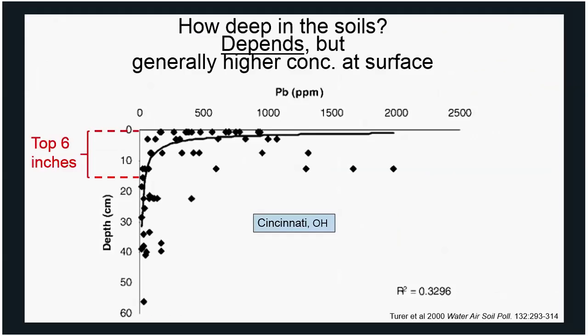Soils are three-dimensional - they go fairly deep. Evidence suggests that because lead was deposited from top down - as an aerosol from gasoline, as paint chips, or from rainfall - a lot of the lead is building up in topsoil. The top six to eight inches is where, in general, most lead is found in soils. This is in some sense good because it allows one to excavate a surface soil and truck it out if there are severely high amounts of lead. On the other hand, deeper lead is more expensive to remove, and plant roots can go deep and potentially tap into those lead reserves.